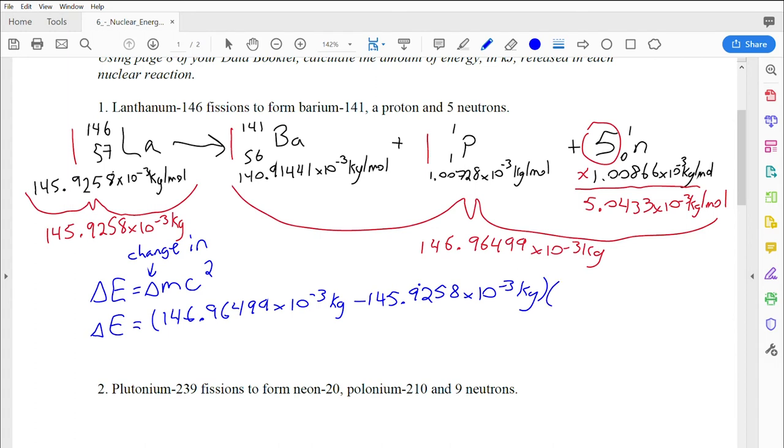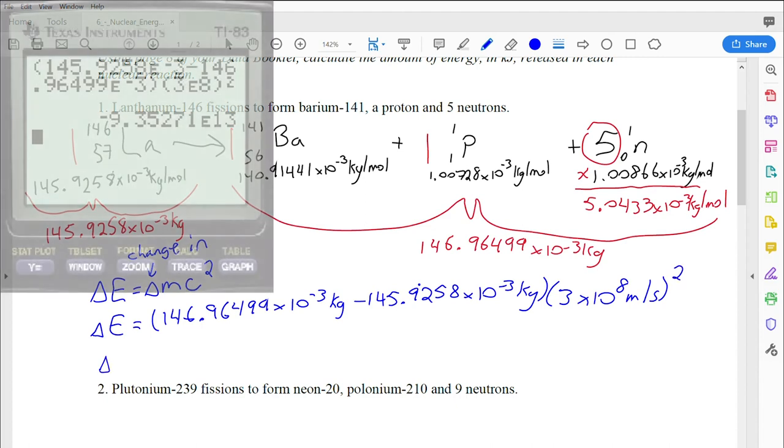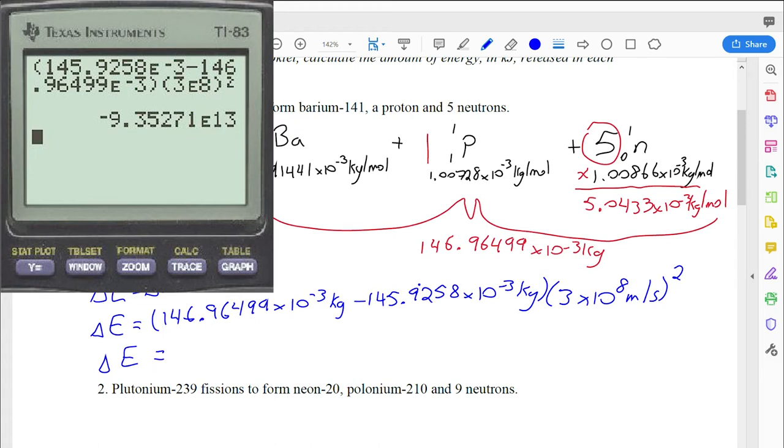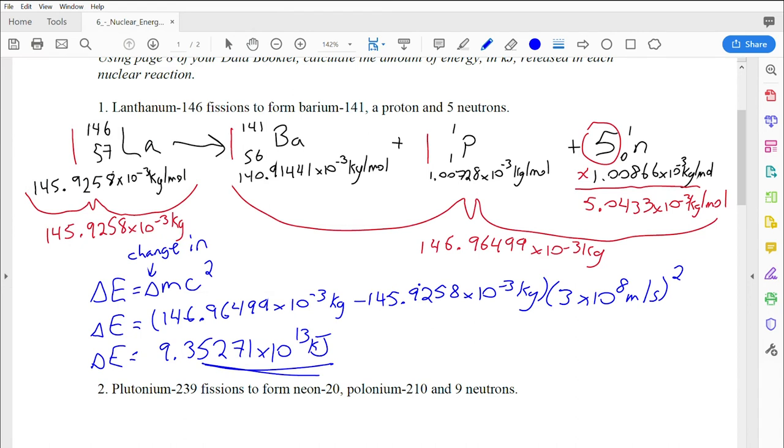The last thing we're going to do is multiply this by c. So c is the speed of light, three times 10 to the 8 meters per second, and that is on your data sheet as well. And we've got to square that. Here comes the moment of truth. We are going to type all of this through our calculator now. I get for my energy released 9.35271 times 10 to the 13 kilojoules. So there's our first nuclear energy calculation. All the other ones work essentially the same way.